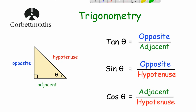So those are the trigonometric ratios, and they're really important to learn: tan theta equals opposite over adjacent, sine theta equals opposite over hypotenuse, and cos theta equals adjacent over hypotenuse. Some people remember the mnemonic SOH CAH TOA — where SOH means sine equals opposite over hypotenuse, CAH means cosine equals adjacent over hypotenuse, and TOA means tan equals opposite over adjacent. I like to remember 'two old angels skipped over heaven carrying a harp,' which also helps remember the trig ratios.